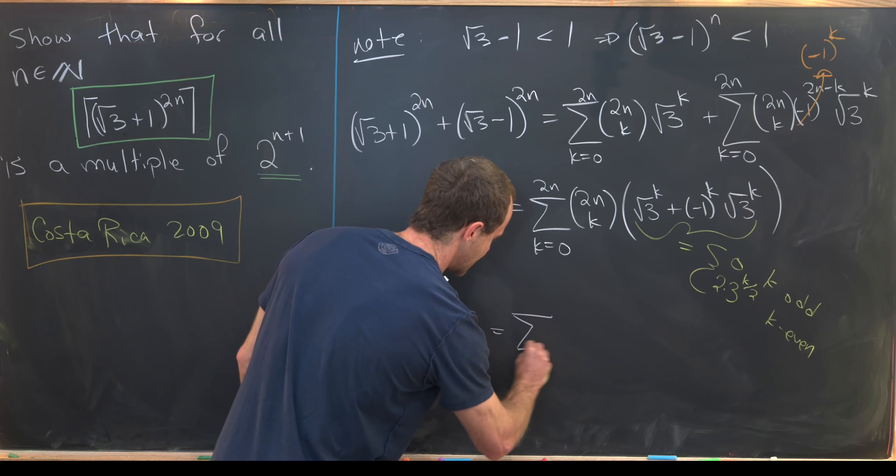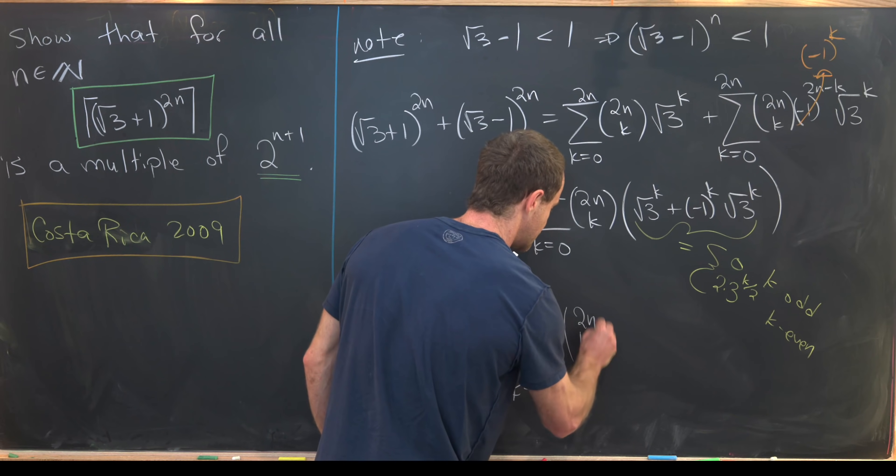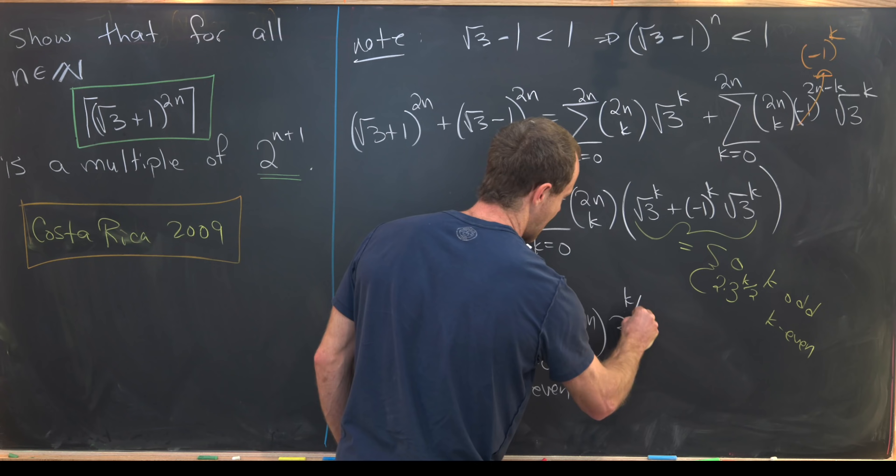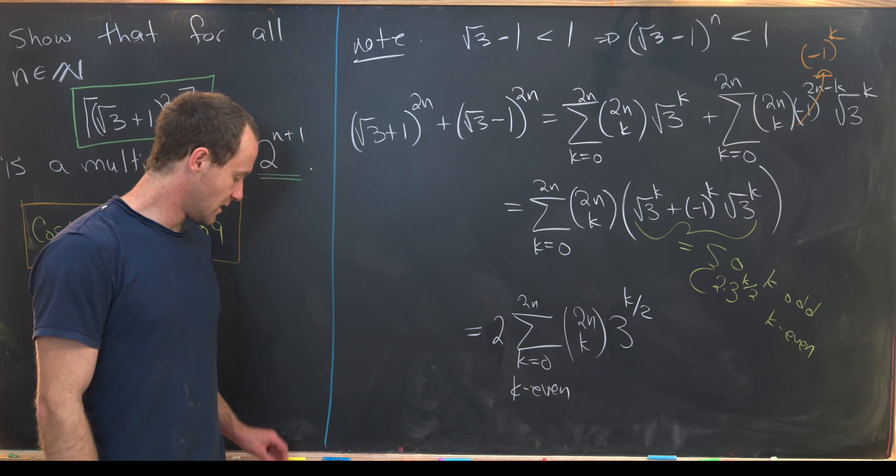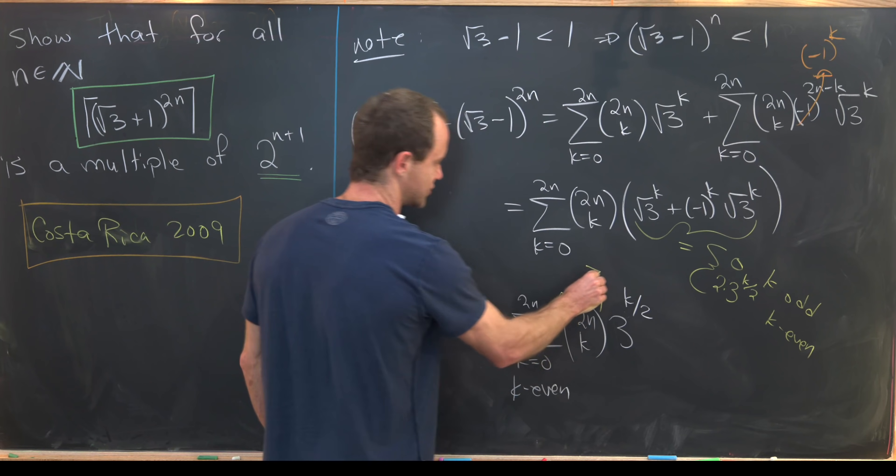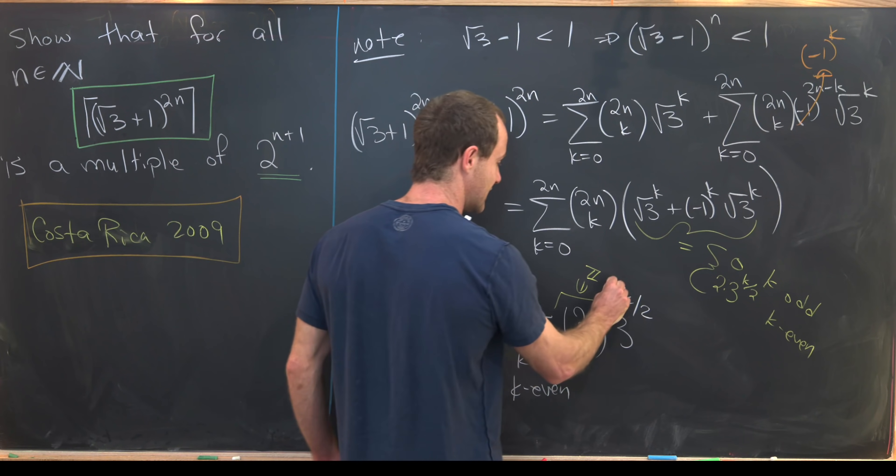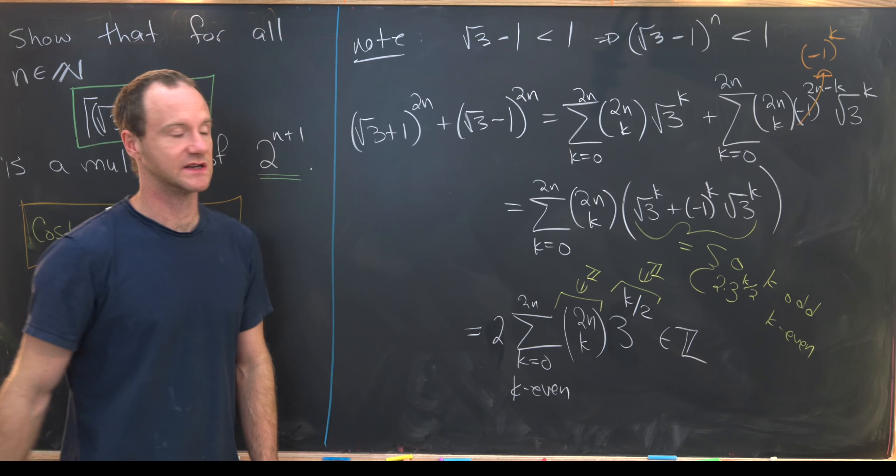So that means this is going to change into the sum as k goes from 0 to 2n over just the even values of k of 2n choose k times root 3 to the 2k or in other words 3 to the k over 2. And I'll just go ahead and bring that 2 out front that's multiplying this here. But then binomial coefficients like this are always integers. Since k is even, this is always an integer. So that means our object here is also always an integer.